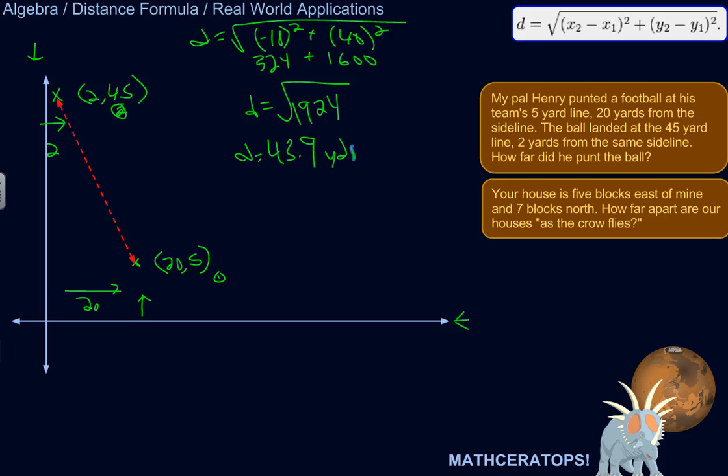So let's mark this. I'm just going to mark it over here. It's not going to be on the same scale as the football problem, but that doesn't really matter. Let's switch colors too. Let's call this my house and let's call this your house. So your house is five blocks east of mine and seven blocks north. I haven't said where mine is, so I've just said where yours is relative to mine. So let's call my house the origin.